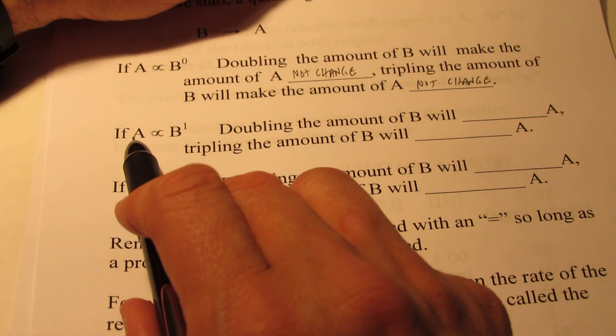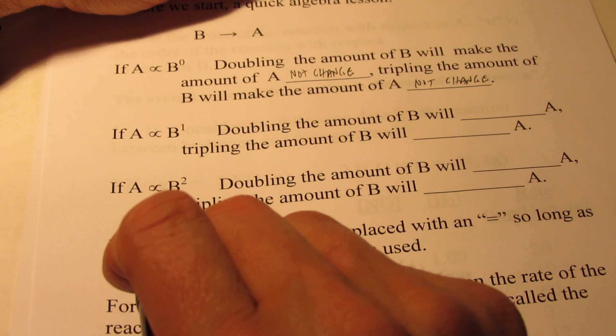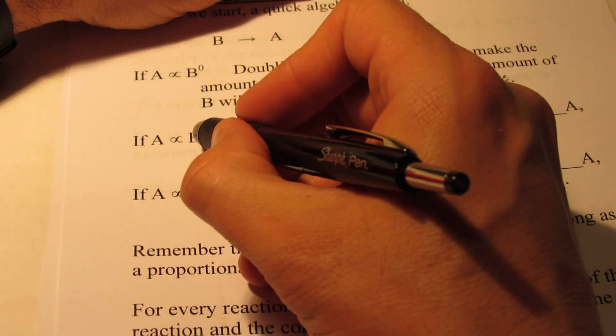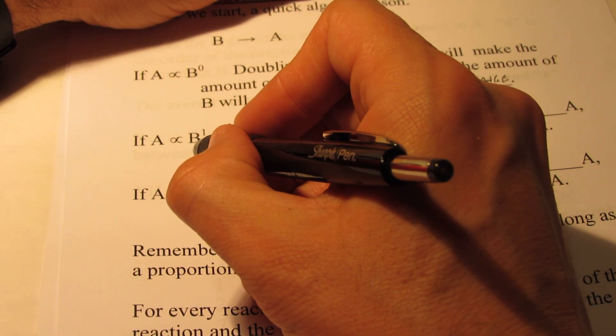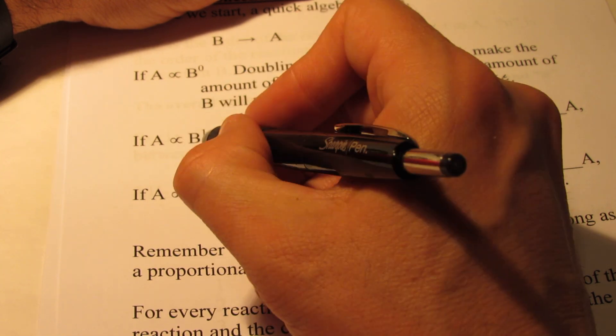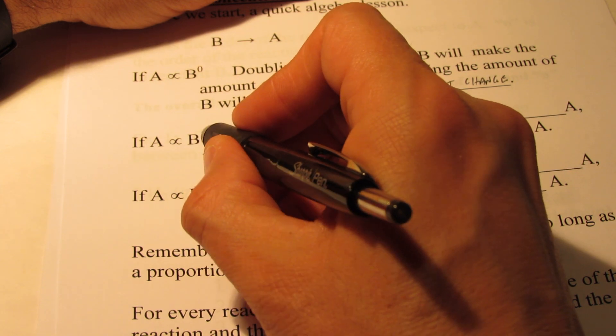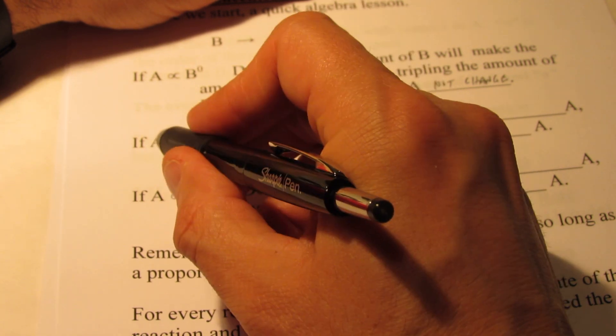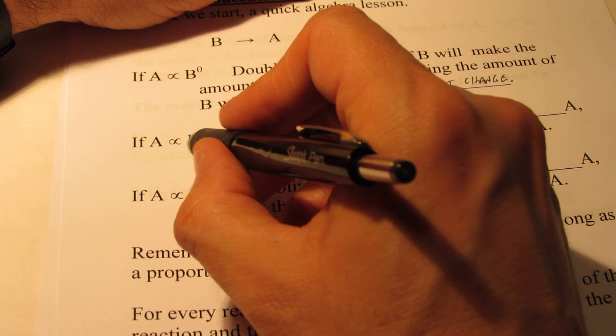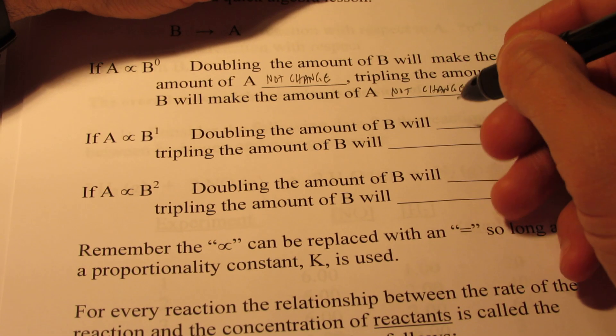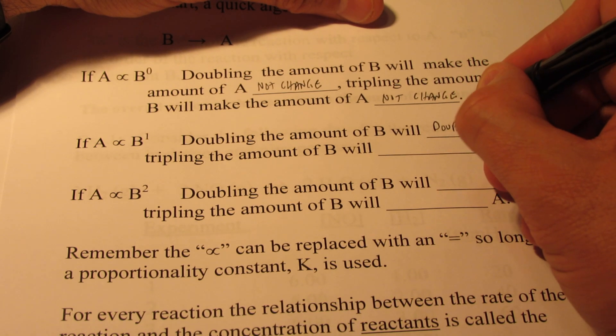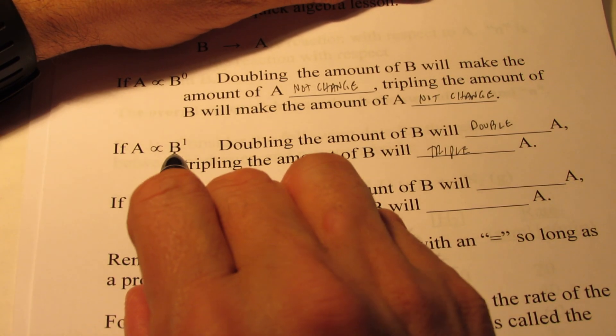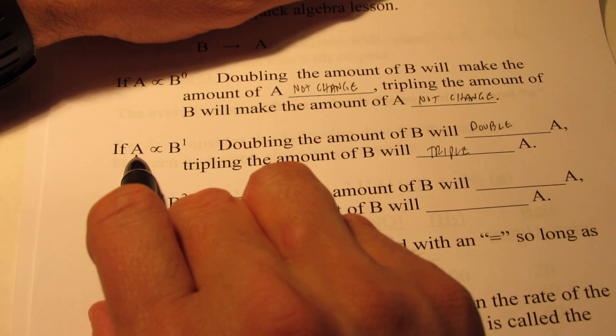However, if A is proportional to B to the first power, let's think about this. Doubling B will do what to A? If B was equal to 1, 1 to the first power is 1. If I double B and make it 2, 2 to the first power is 2. Doubling B doubled A. What if I triple B? 3 to the first power is 3. So doubling B doubled A. Tripling B tripled A. Whatever I do to B, that's what happens to A. We call that a direct proportionality.